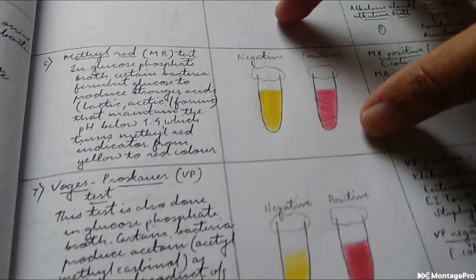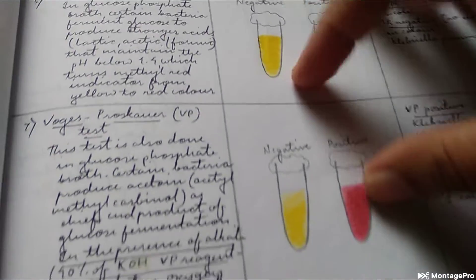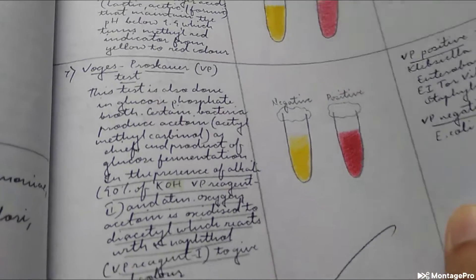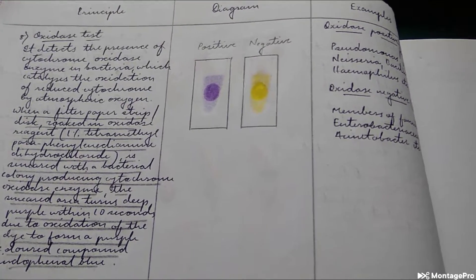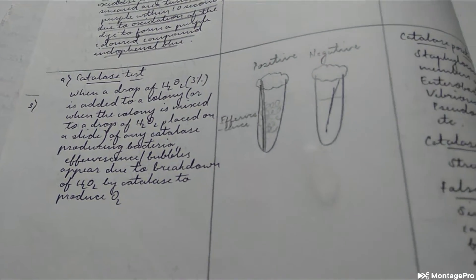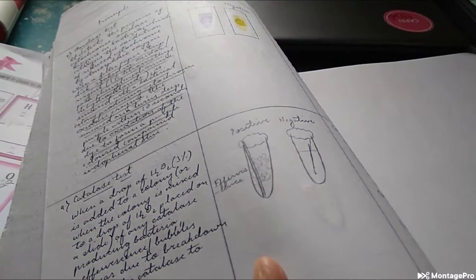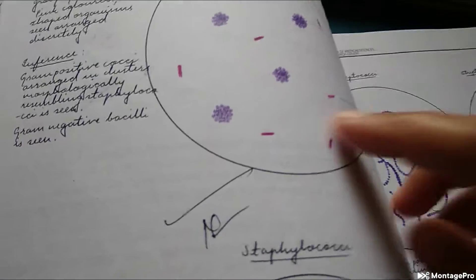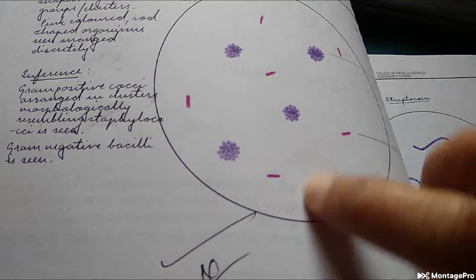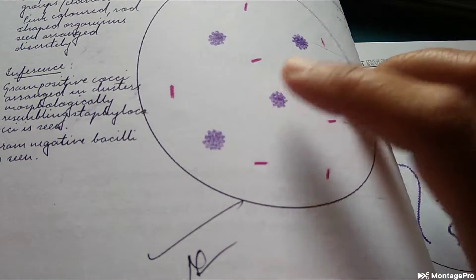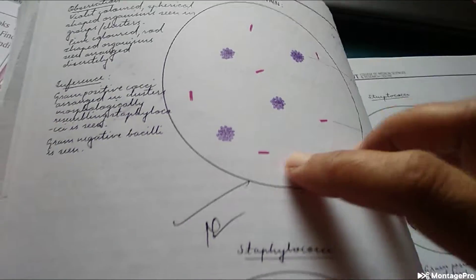Then what is this? Methyl red Voges-Proskauer test, a lot of things to know. Oxidase test, catalase test. Personally I would say they've drawn and written very badly in this record, our records were very neat. These are bacteria - you have the cocci, bacilli, gram positive, gram negative. You can see the purple, the pink.